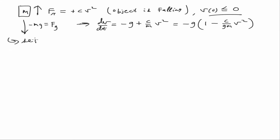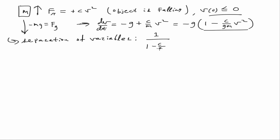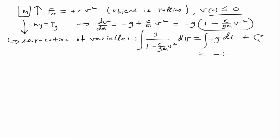We can solve this via separation of variables. Dividing out the factor and multiplying dt to the other side gives: one over the quantity one minus C over gM times v² dv, equal to negative g dt. We integrate both sides, adding a constant — I'll use a serif C to distinguish it from the drag coefficient C.